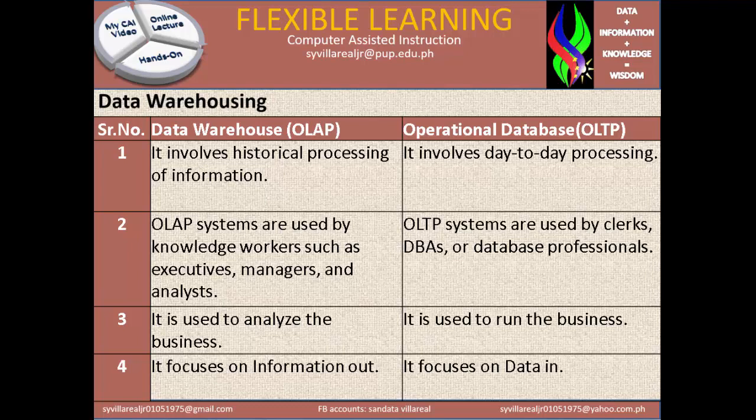Number 2: OLAP systems are used by knowledge workers such as executives, managers, and analysts. In Operational Database, OLTP is considered to be a system used by clerks, Database Administrators, or database professionals. Number 3: Data Warehouse OLAP is used to analyze the business, while Operational Database OLTP is used to run the business.